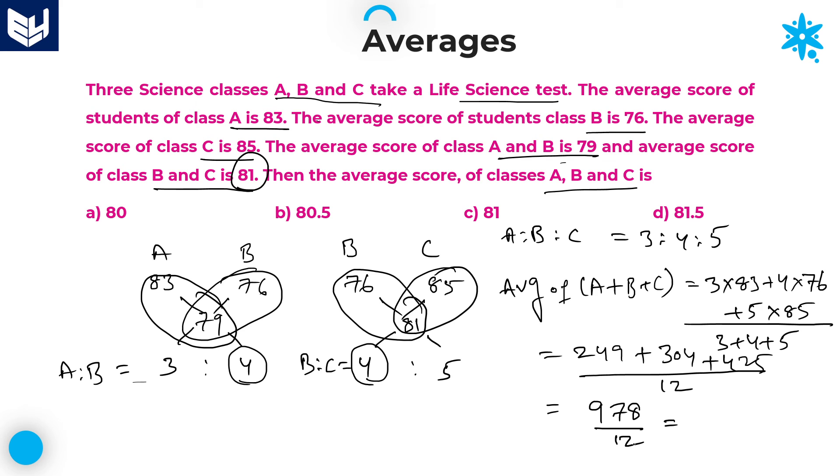That is the required answer. Now you can take it as 12 into 8 is 96, 18, 12 into 6, still you left over with 6. 0.60, 60 means 12 into 5 is 60. So 81.5.